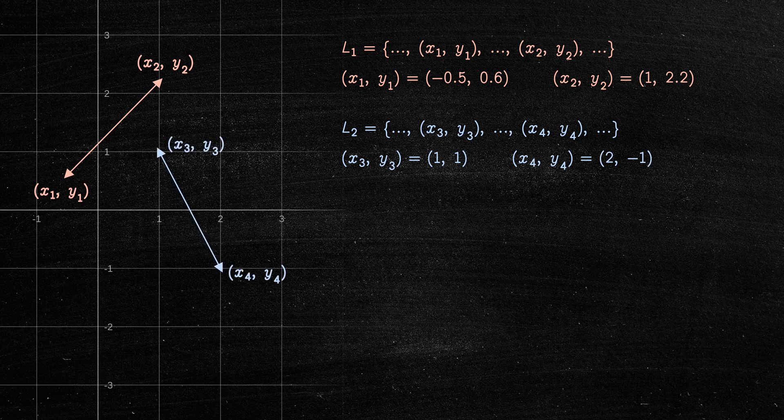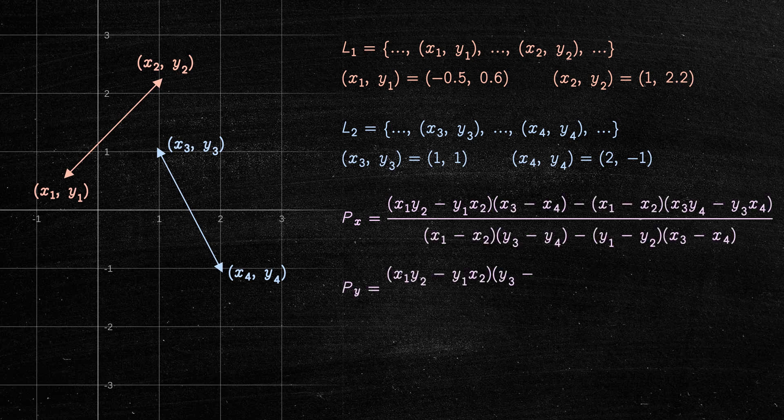The intersection P of these two lines can be defined as follows. When the two lines are parallel or coincident, the denominator in these two fractions is zero.